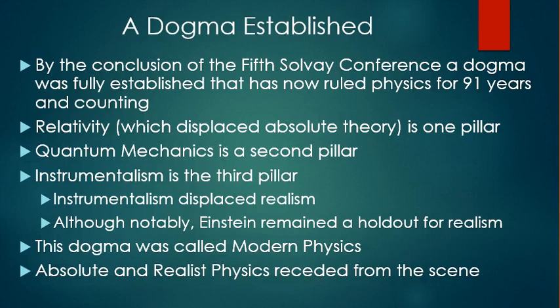By the conclusion of the fifth Solvay conference, a dogma was fully established that has now ruled physics for 91 years and counting. Relativity, which displaced absolute theory, is one pillar. Quantum mechanics is the second. And instrumentalism is the third pillar. Instrumentalism displaced realism, although, notably, Einstein remained a holdout for realism. This dogma was called modern physics. And absolute and realist physics receded from the scene.